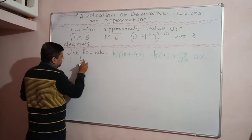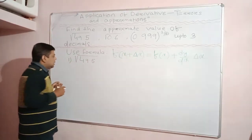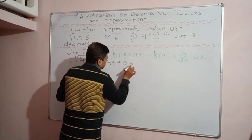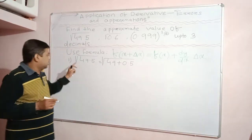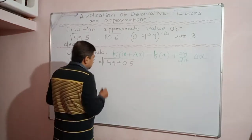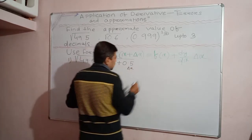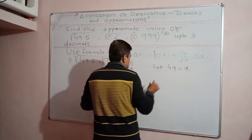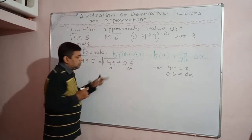The first problem is to find the square root of 49.5. We can write 49.5 as 49 + 0.5. Since 49 is a perfect square, we write √49.5 = √(49 + 0.5). We let x = 49 and Δx = 0.5, which is the small change — the decimal part.